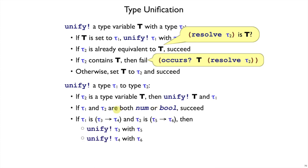The last case, finally, is that tau1 and tau2 are both arrows. They could still be the same, but it depends on the arguments being the same and the results being the same. So what unify does in this case is it just recurs with those two parts. It unifies the argument part of the first arrow and the argument part of the second arrow, and the same for the result parts.